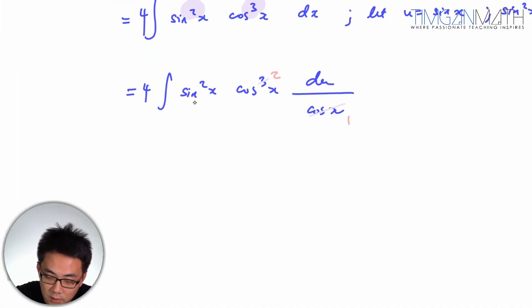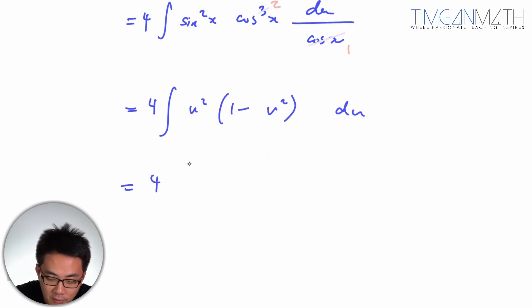And this case here, this is already u square. So this is 4, this is u square. Cosine square x would be 1 minus sine square x, which happens to be u as well. So this case here would just be u square, just like that. Okay? So it's 4, u square minus u to the 4. Du,